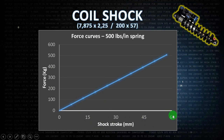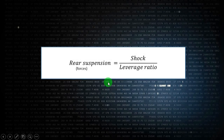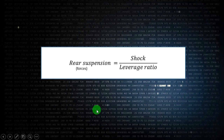Converting this graph to metric units: to compress the shock — which is a 57 millimeter stroke shock — you need 500 kilograms of weight to compress the full shock stroke. The force of the rear suspension is the ratio between the force of the shock divided by the leverage ratio.